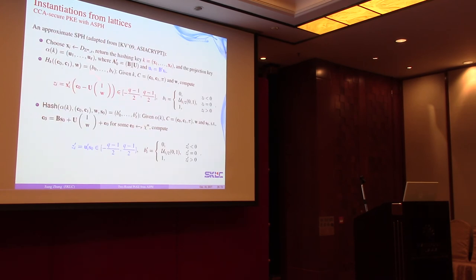The hashing key is simply chosen from the discrete Gaussian, and the projection key is the inner product of matrix B and XI, where B is from the part of the public key. To compute the hash value, we first compute ZI as this formula, where C is the ciphertext and W is our message. After this, we determine each output bit of the hash function by comparing ZI with zero. Given the projection key alpha K, we directly compute ZI prime as the inner product of the projection key and the randomness of the ciphertext. Then we determine the output of the hash function by comparing ZI prime with zero.